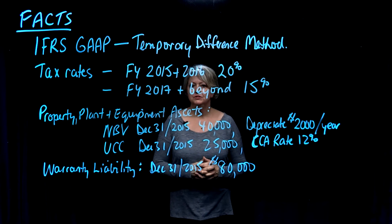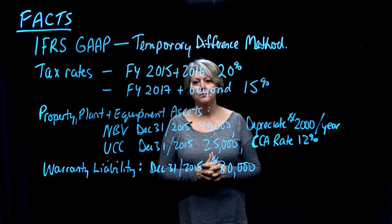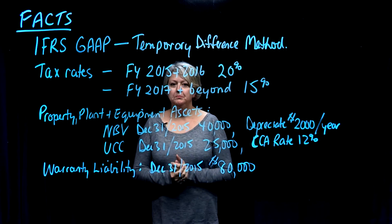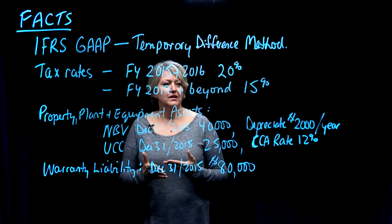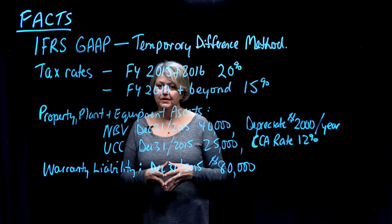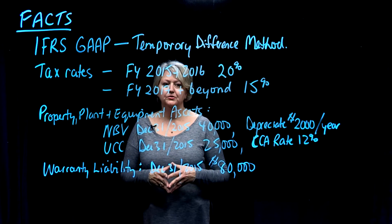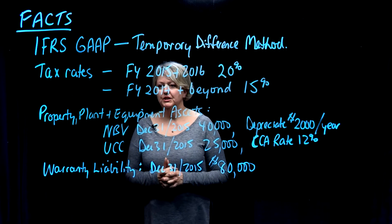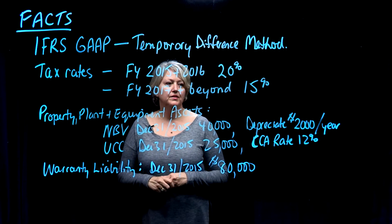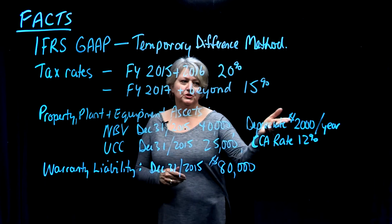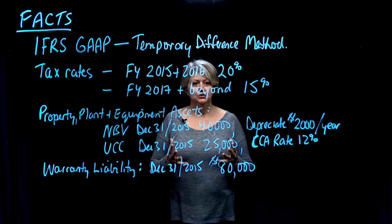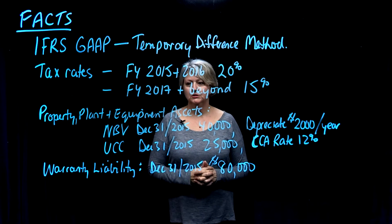Other facts relevant to the tax accounting for this year are the property, plant and equipment assets — which I'll sometimes abbreviate as PPE. At the end of last year, December 31st, 2015, they had a net book value of $40,000: gross value of $55,000 and accumulated depreciation of $15,000. The relevant figure for tax accounting is the net book value of $40,000, and we'll assume $2,000 per year straight-line depreciation, so in 2016 another $2,000 of depreciation expense will be booked.